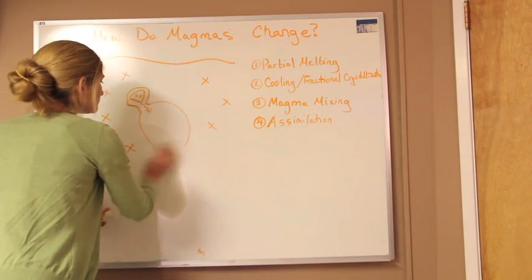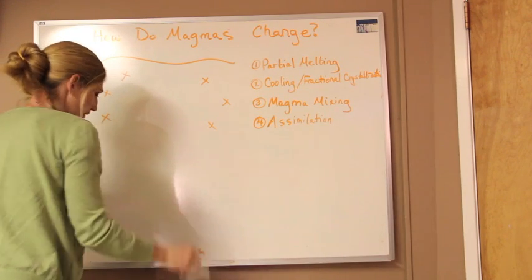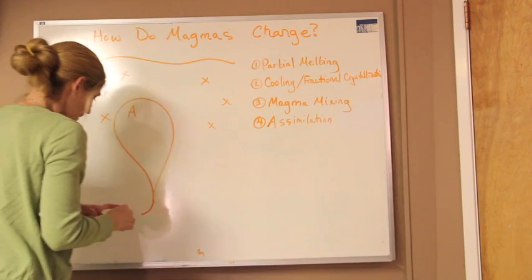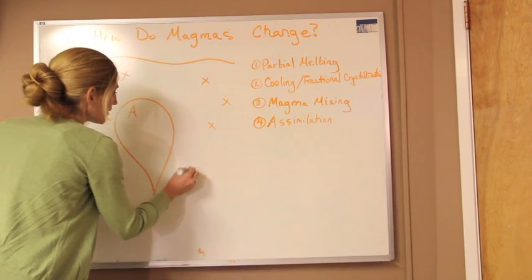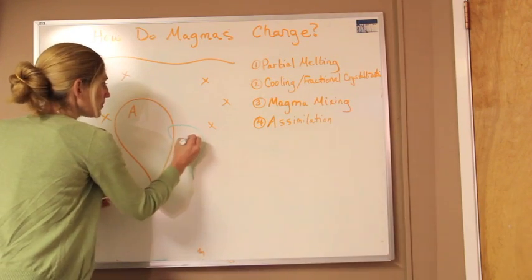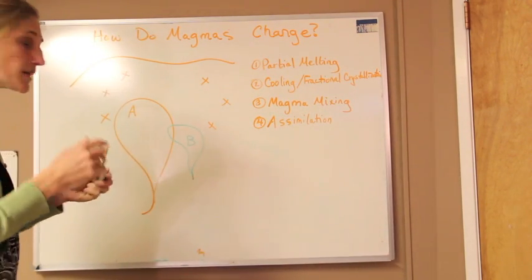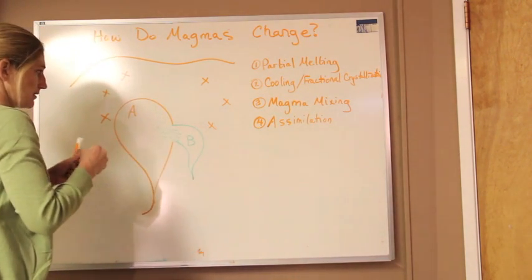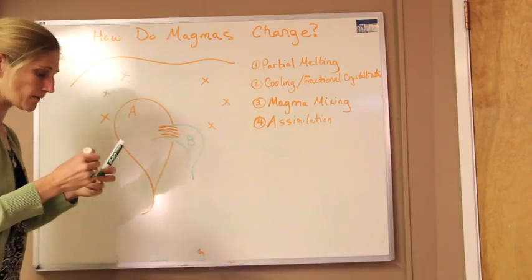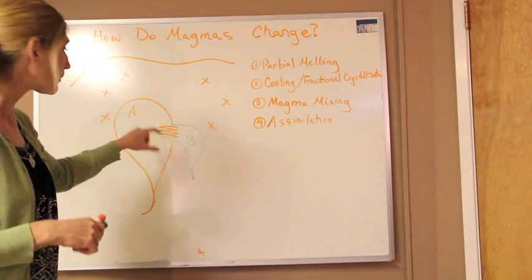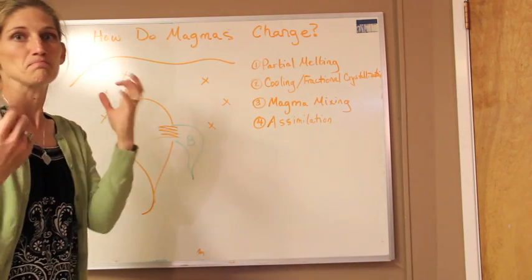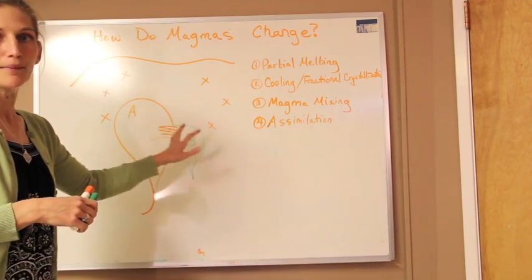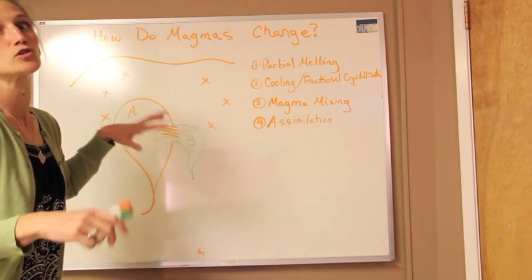Another thing that can happen as the magma is moving up — we're going to call this one A — there might be a second blob of magma rising up and we'll call it B. If they start to merge and join together, they're going to cross bounds and start to mix so that B becomes part of A. If A were an intermediate magma and B was a mafic magma, we take an intermediate and a mafic and combine those two, and we're going to see a composition between that mafic and intermediate.